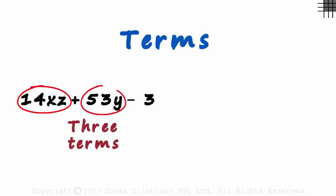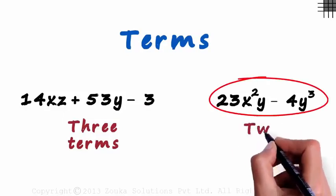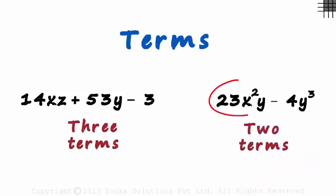14xz, 53y and 3. The second expression is 23x squared y minus 4y cubed. This expression has just two terms, 23x squared y and 4y cubed.